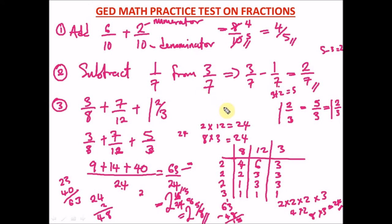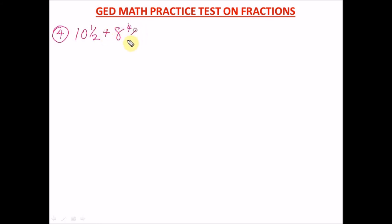Let me change to a thinner marker and clear the screen. Question four: 10 and 1 over 2, plus 8 and 4 over 5, plus 3 and 1 over 4. All of these are mixed fractions, so we have to convert them all to improper fractions.